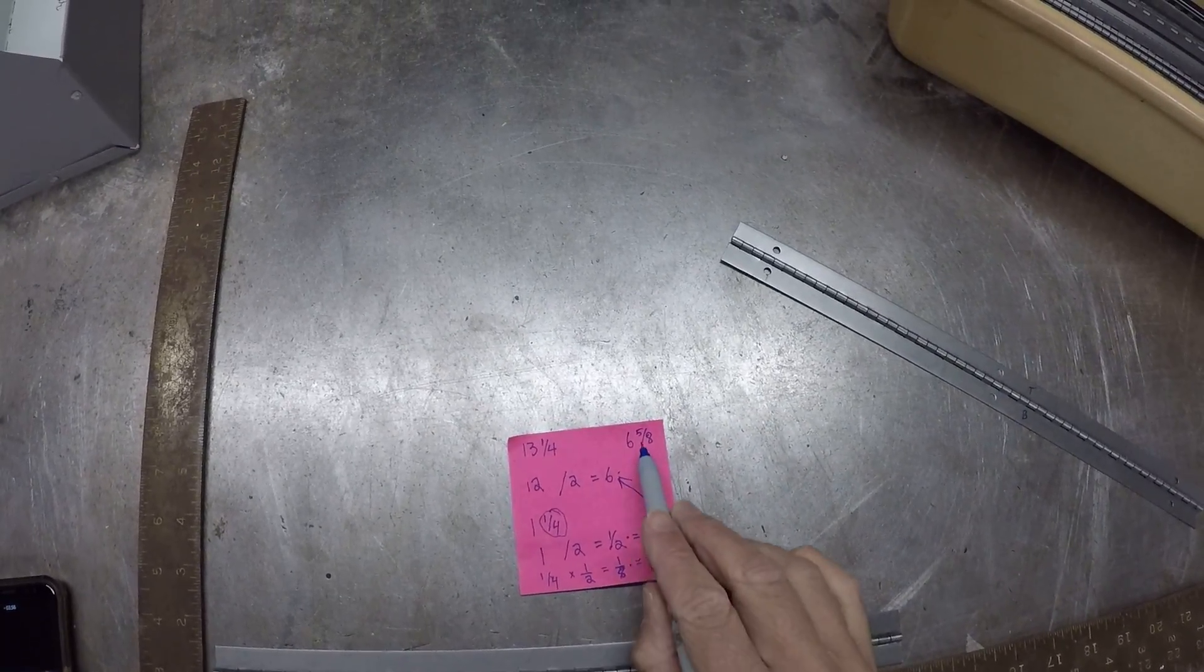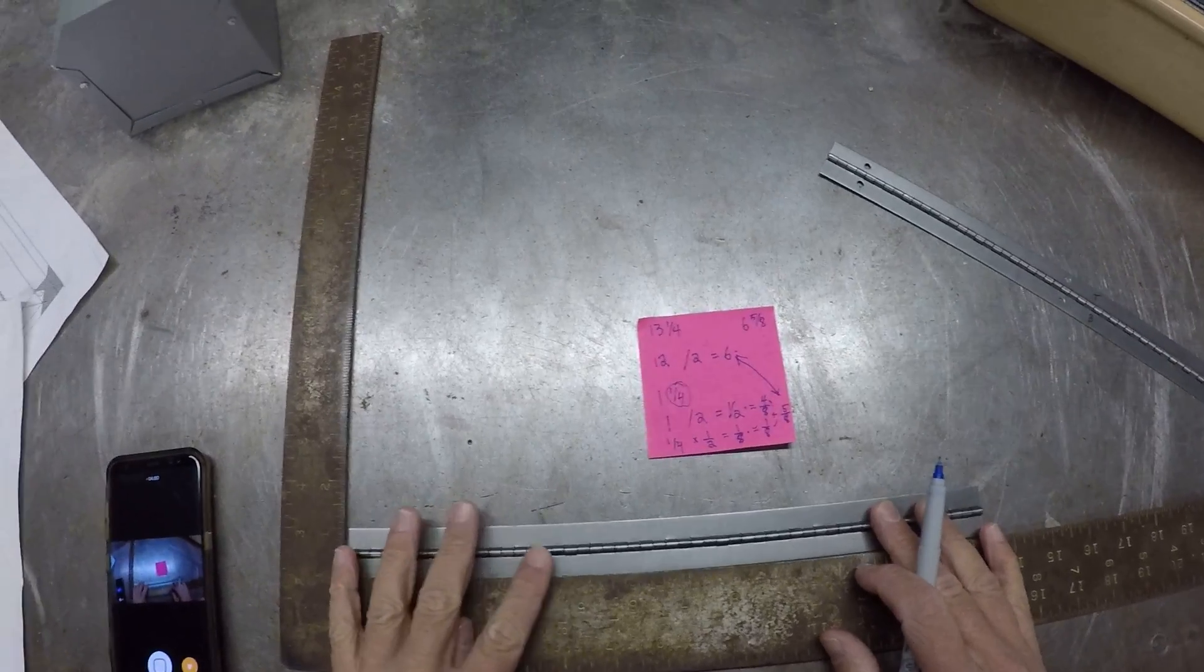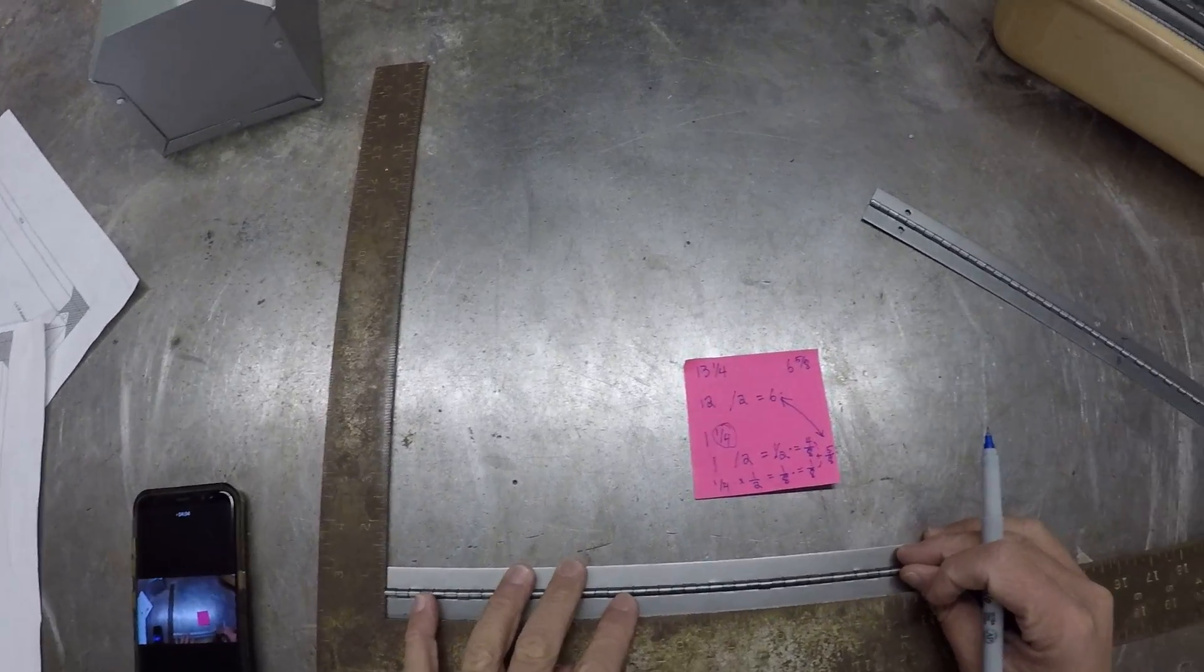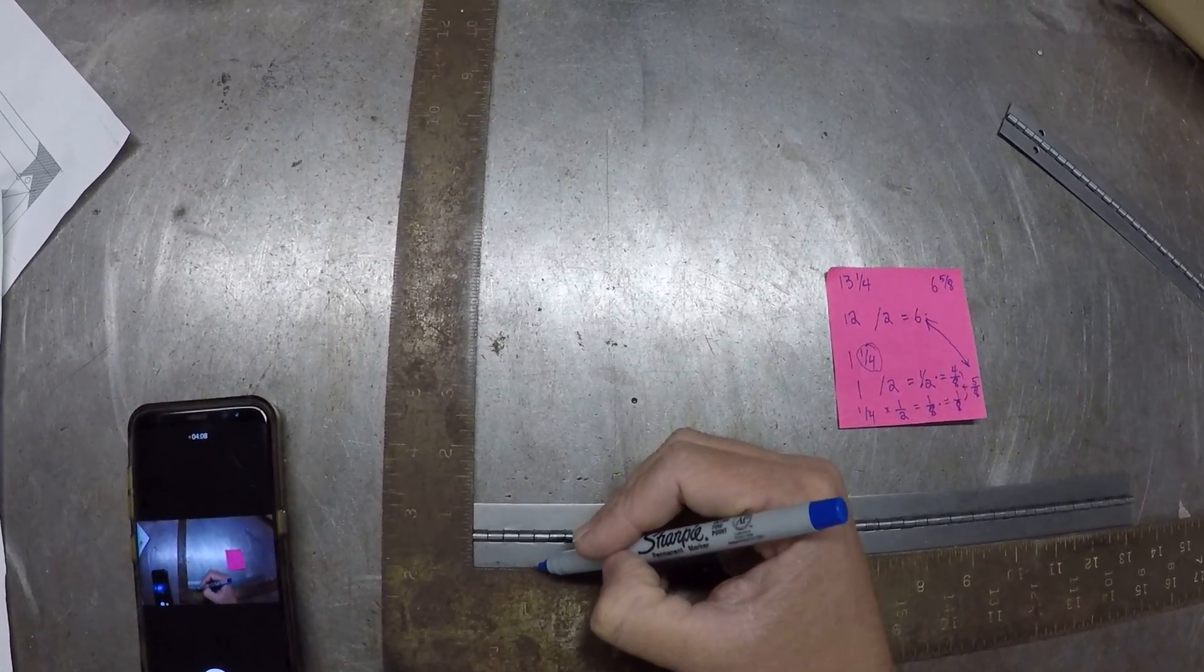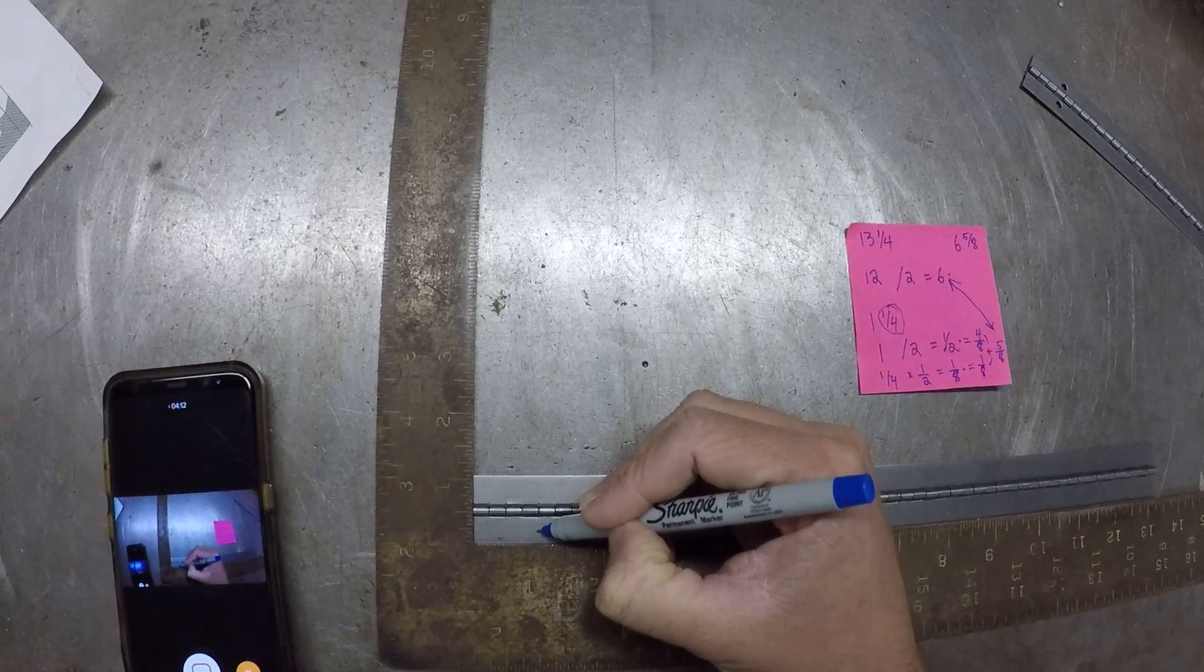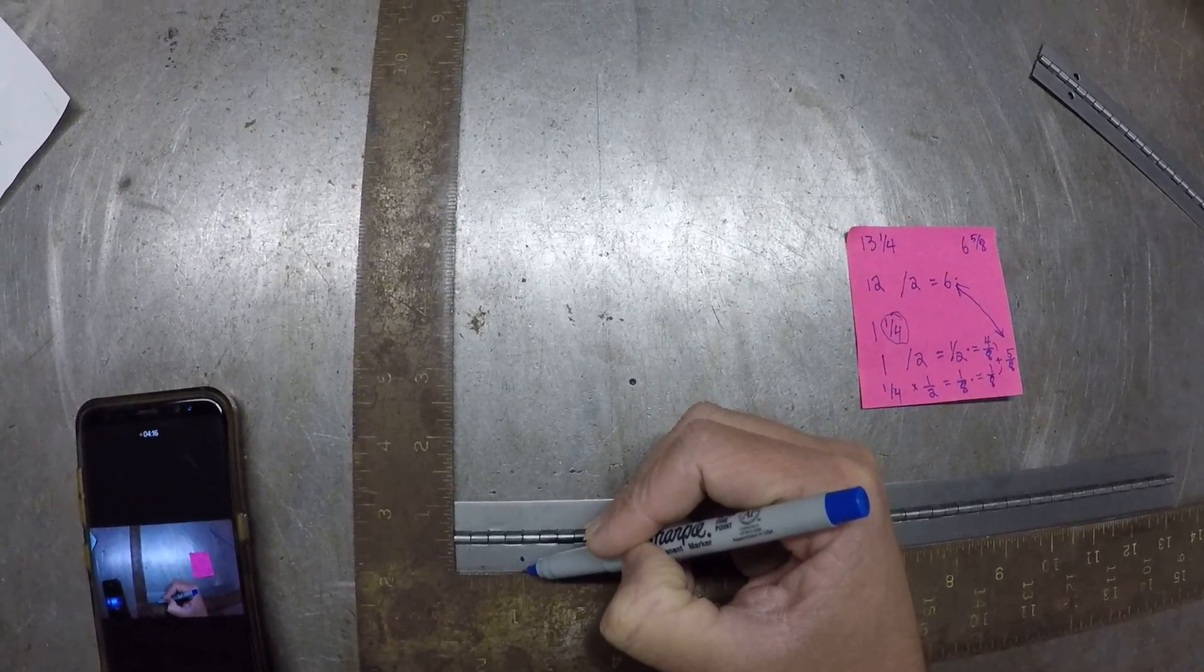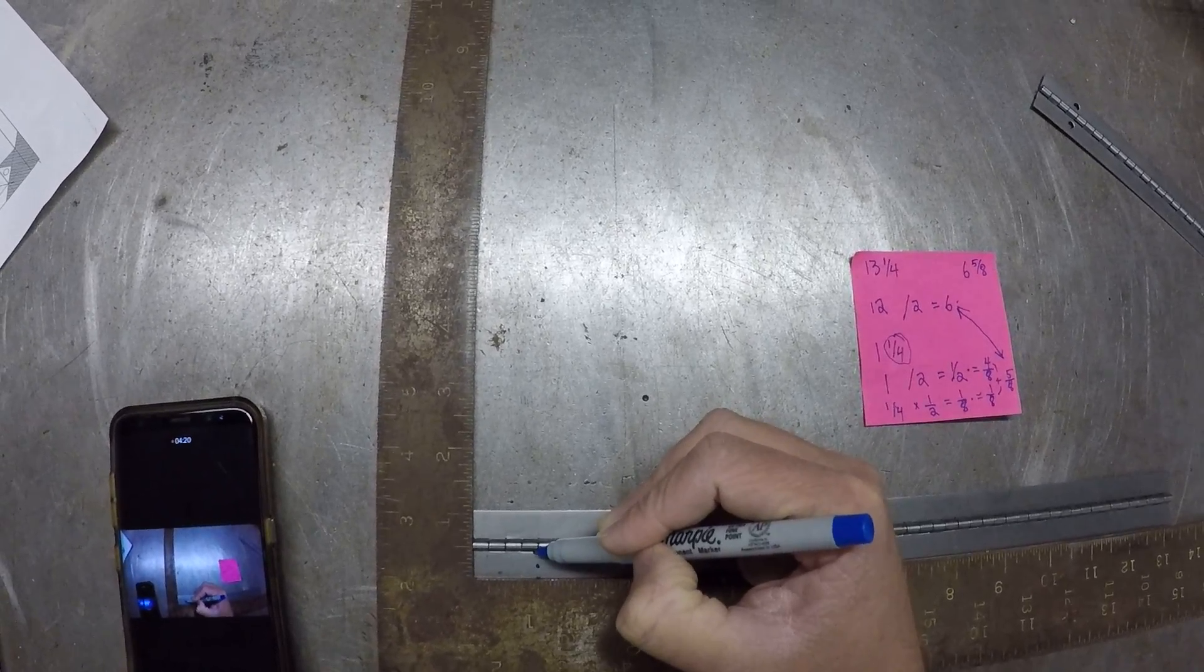So on our hinge here, I'm going to use my square. You guys can use a ruler for this. I'm going to measure in one inch, and from one inch I'm going to come up and mark a dot that is halfway between the edge and that hinge center right there.